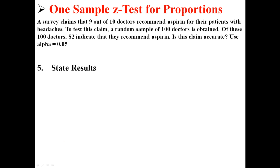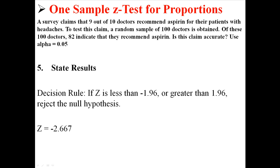Now I'm going to state our results. Our decision rule was that if z is less than negative 1.96 or greater than 1.96, we're supposed to reject the null hypothesis. And we found a z that was negative 2.667. As you can see, that's less than negative 1.96. So we're going to reject the null hypothesis.